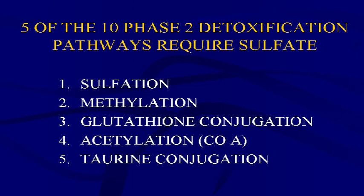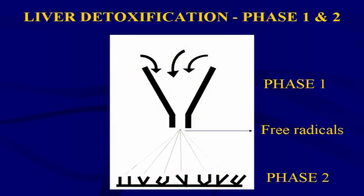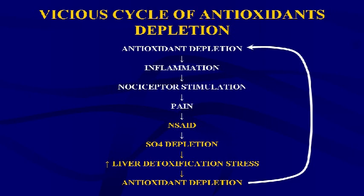If we list the phase two pathways individually — including taurine conjugation, glycine conjugation, and other amino acid conjugations — five of ten pathways are dependent on sulfur. So liver detoxification is heavily dependent on sulfur molecules. When antioxidant depletion occurs from excess phase one activity and poor diet, we get inflammatory activity, nociceptor stimulation, and pain, which causes people to take NSAIDs.